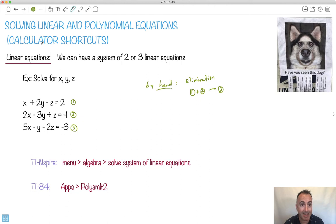I'm just trying to show you a calculator shortcut. There's a couple ways of doing it depending on what calculator you use. If you use the TI-Nspire, you just go to Menu, go to Algebra, and solve a system of equations. If you're on the TI-84, you go to Apps and it's PolySmlt2, which is polynomial and simultaneous equations.